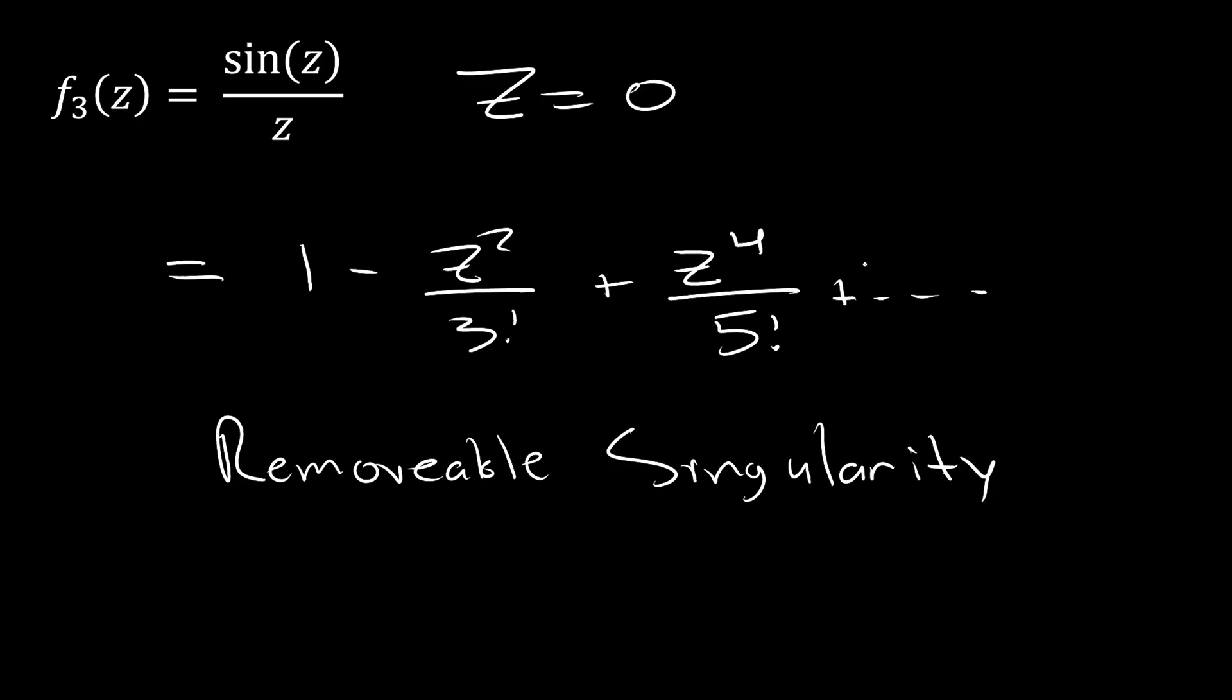And we call this a removable singularity because the singularity that we had before expanding is now removed once we expand. So, when we use the series representation of the function, our singularity goes away.